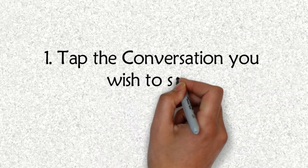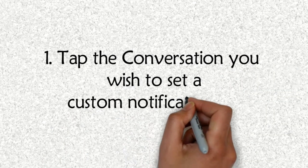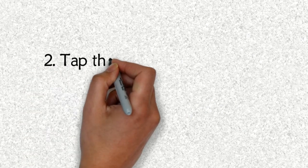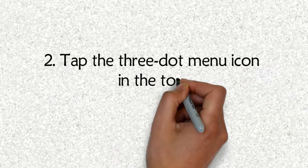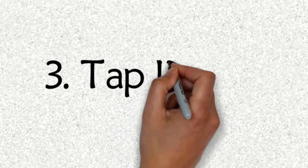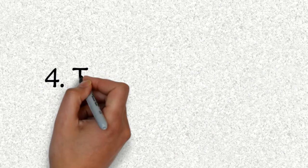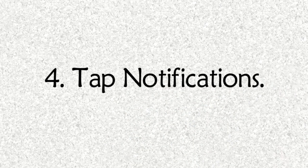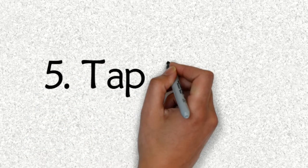1. Tap the conversation you wish to set a custom notification for. 2. Tap the 3-dot menu icon in the top right corner of the screen. 3. Tap Details. 4. Tap Notifications. 5. Tap Sound.